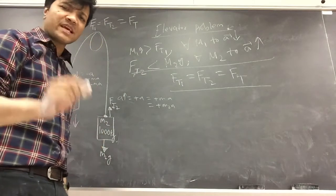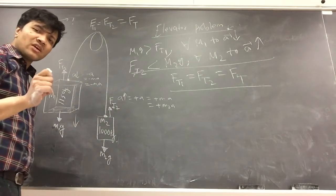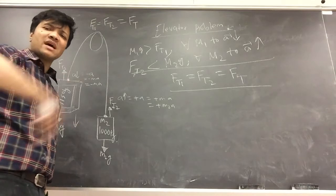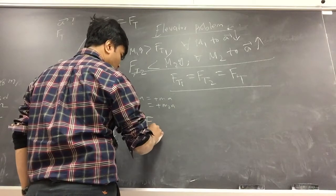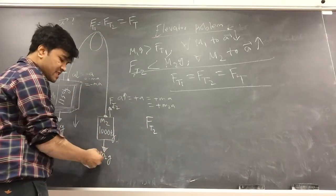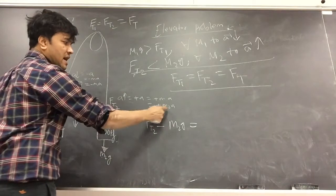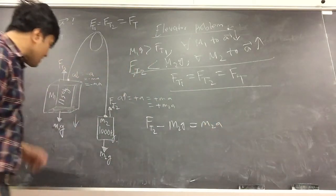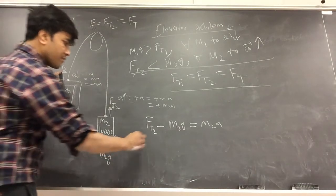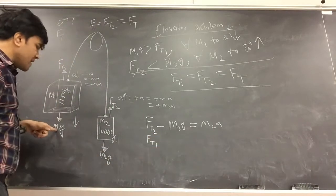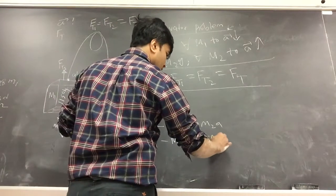We're going to set up equations only in the y-direction, because in this elevator problem nothing is happening in the x-direction. For m2: FT2 minus m2·g equals m2·a (positive, upward). For m1: FT1 minus m1·g equals negative m1·a, since m1 is accelerating downward.